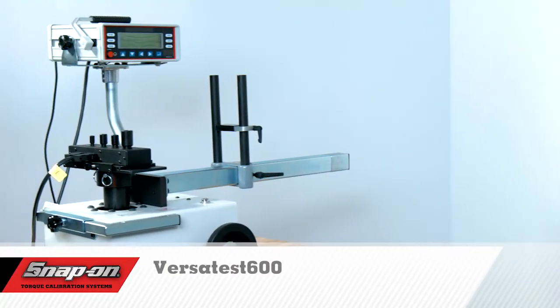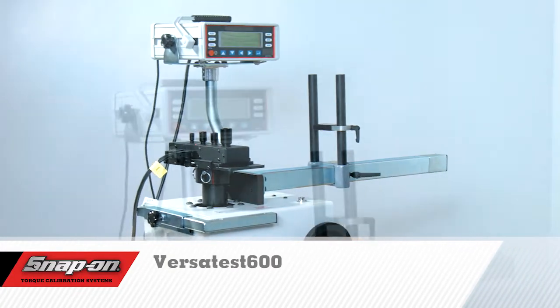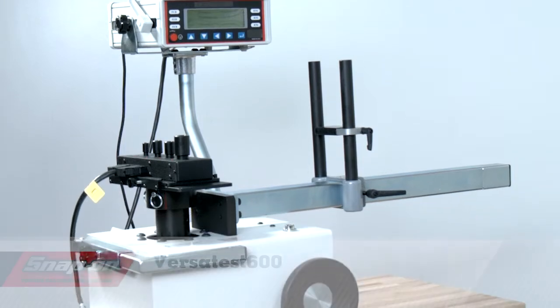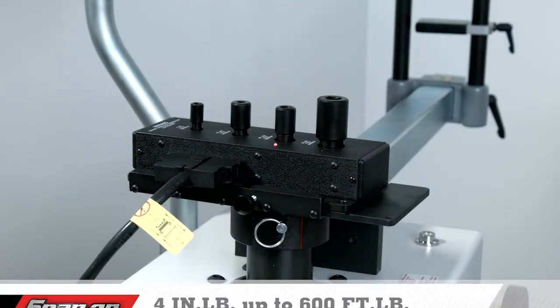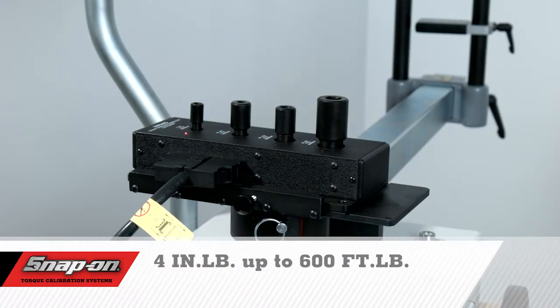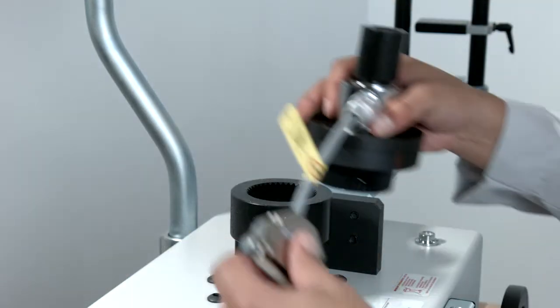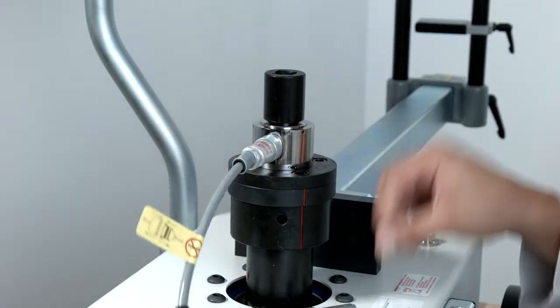First up is the Versatest 600, a compact tabletop torque calibration system. The system includes transducers from 4 inch-pounds up to 600 foot-pounds. Optional transducers down to 5 inch-ounces are also available.